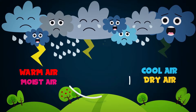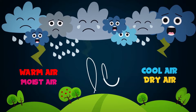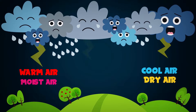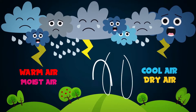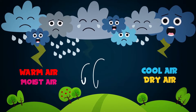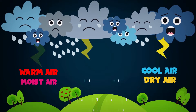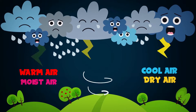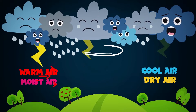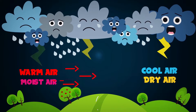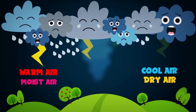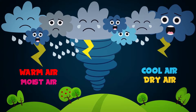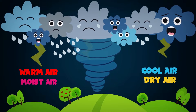A change in wind direction high up in the sky makes the air swirl. Air rising up from the ground pushes the swirling air. The funnel of swirling air begins to suck up more warm air from the ground. The funnel grows longer and stretches towards the ground. When the funnel touches the ground, it becomes a tornado.